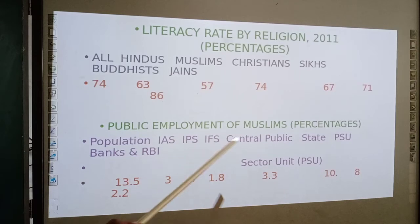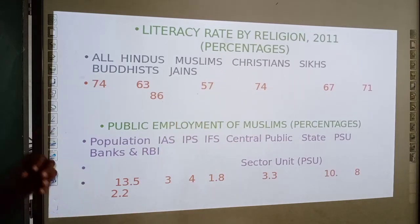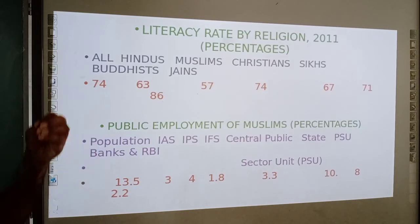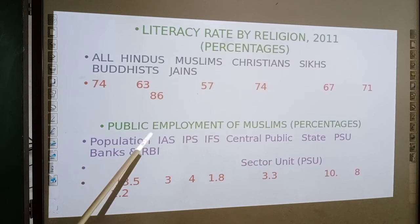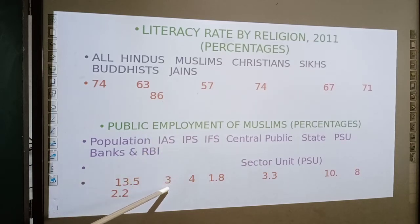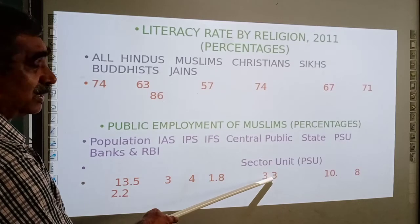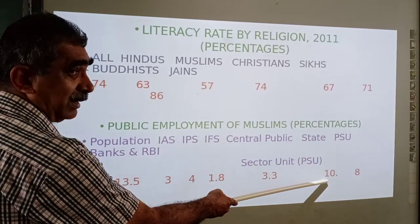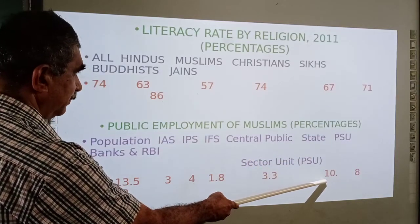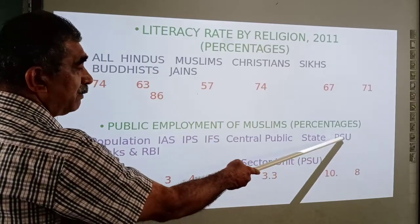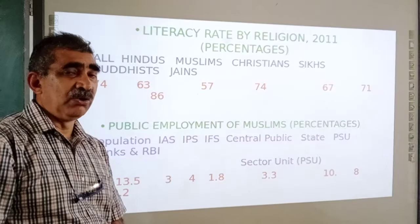When we come to the public employment of Muslims — how many percent of Muslims are in different sectors of the Indian government — their population is around 13 percent. In the IAS, only 3 percent are Muslims. In the IPS, only 4 percent. In higher services, 1.8 percent. In central government public sector undertakings (PSUs), 3 percent, and in state PSUs, 8.3 percent. The state government has around 10 percent, and state PSUs I hope you understand — like our KSRTC, or different government-owned companies.